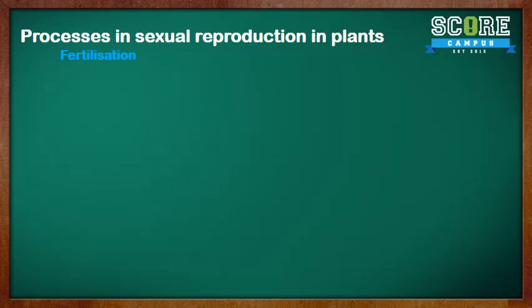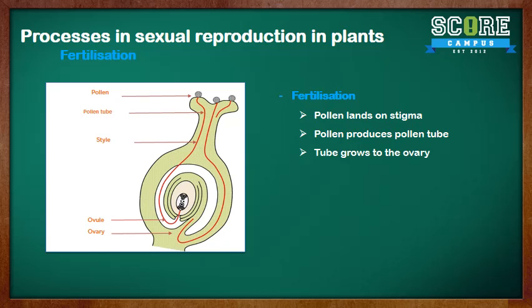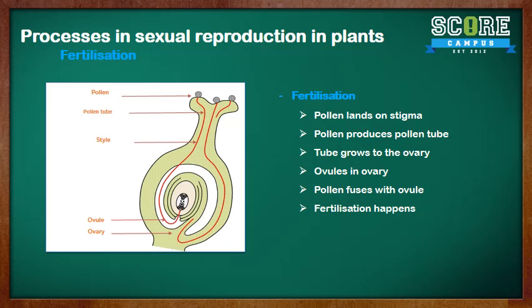Now, fertilization. When the pollen lands on the stigma, each pollen produces a pollen tube. This tube grows from the stigma through the style to the ovary. In the ovary are the ovules, and these ovules contain the egg cell. When the male reproductive cell, which is the pollen, fuses with the female reproductive cell, which is the egg, fertilization happens. Both the male and the female reproductive parts are required, and this is why we call it sexual reproduction.